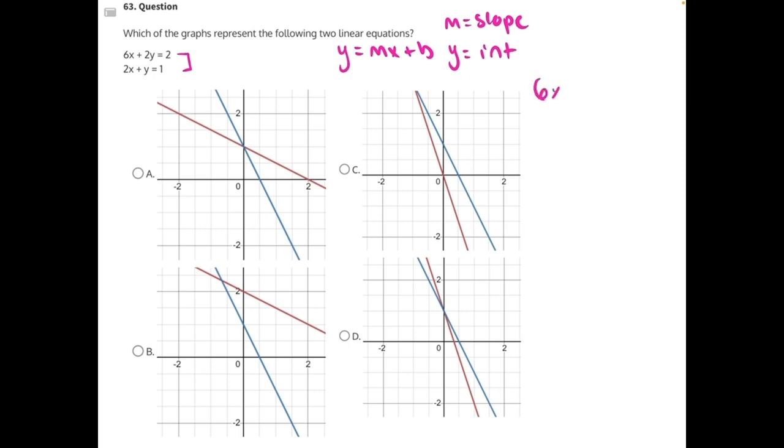So let's start with our first equation, 6x plus 2y equals 2. And if we want to put it into slope-intercept form, we need to isolate our y variable. So let's take everything else and move it to the other side of the equation.